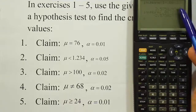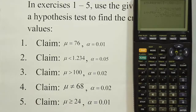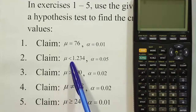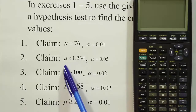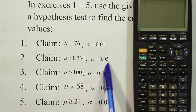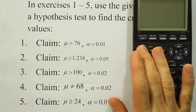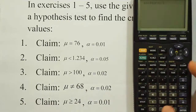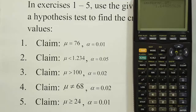For the next problem, HA has a less than symbol, so it's a left-tailed test. For a left-tailed test, we simply enter alpha into the calculator. Using second → vars → option 3, we type in 0.05, close the parenthesis, and get the answer: minus 1.645.